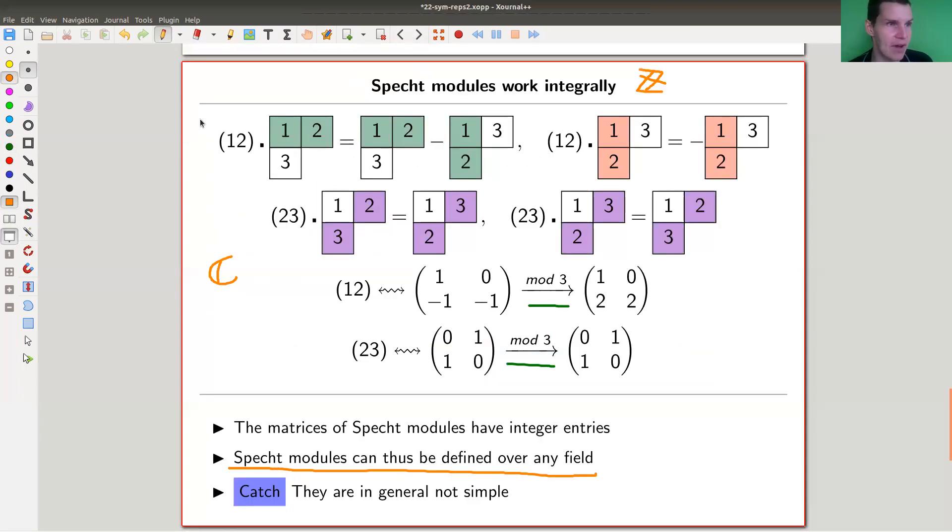Here's an example. By the way, I've just written down how the error terms look like in this one case. Green was the eigenvalue one case, and there might be an error term. Red was the eigenvalue minus one case. Purple was the even easier one, the simple permute. So two-three just permutes, one-two is this action here. You take mod three, you get those two matrices.